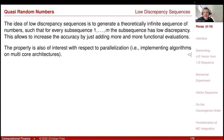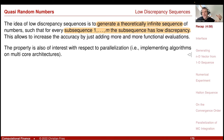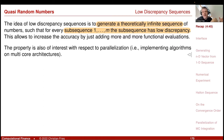The idea was then to generate a theoretically infinite sequence such that every sub-sequence has low discrepancy. We can add more and more points to increase the accuracy, like for true random numbers that are just independent samples. But we would like to add them in such a way that every sub-sequence has low discrepancy.